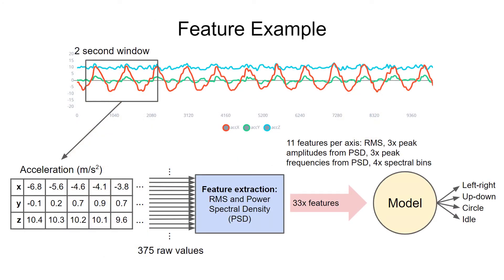After that, we dove into feature extraction — why it's needed and how to do it for our motion detection example. Machine learning models can sometimes learn features on their own, but often we need to help them by pre-calculating things like the root mean square or the fast Fourier transform of the data.